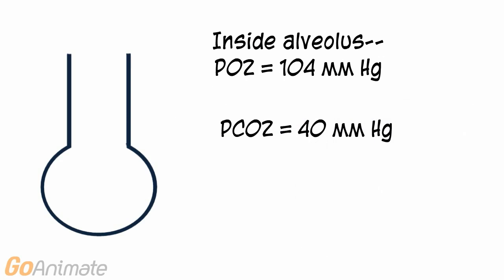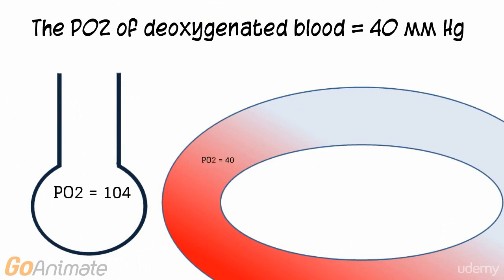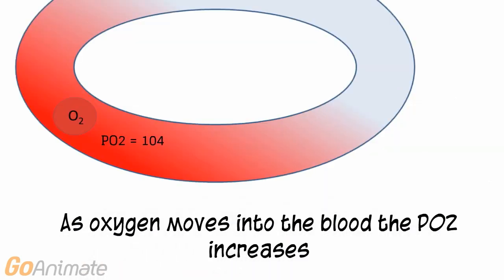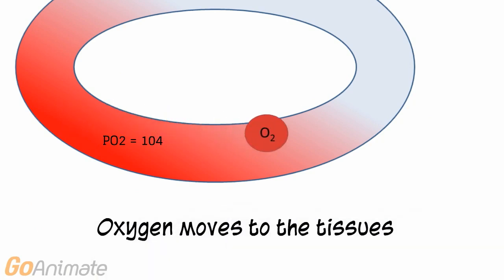The PO2 inside of the alveolus of the lung is about 104 mmHg, and the PCO2 is about 40 mmHg. The PO2 inside the capillaries carrying deoxygenated blood surrounding the alveolus is about 40 mmHg. Oxygen diffuses from the higher PO2 of 104 to the lower PO2 of 40, so oxygen moves from the alveolus to the blood. The movement of oxygen into the blood increases the PO2 of the blood to 104 mmHg.